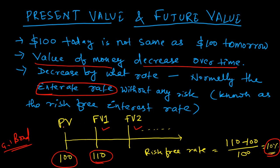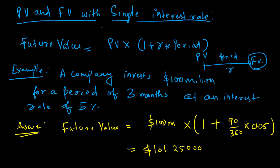This means the value of 100 dollars decreases by 10% over time. That is the main concept of present value and future value — the value of a particular asset does not remain the same over time. These concepts of present value and future value are heavily used in finance while valuing assets.